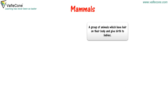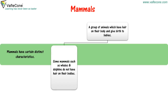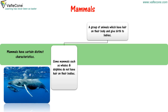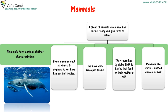A group of animals which have hair on their body and give birth to babies are called mammals. Mammals have certain distinct characteristics. Some mammals such as whales and dolphins do not have hair on their bodies. They have well-developed brains and reproduce by giving birth to babies that feed on their mother's milk. Mammals are warm-blooded animals as well.